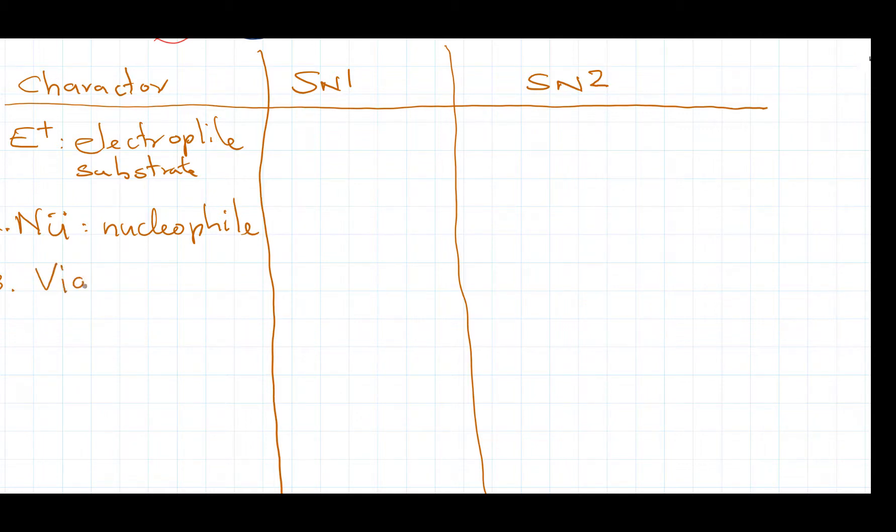what type of reaction mechanism, whether it's carbocation or a transition state. So the fourth character has to be the graph. So we should be aware of the graph, whether it has two bumps or one bump.